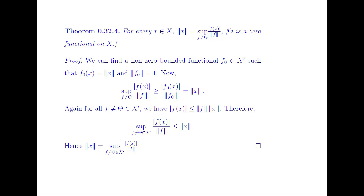Again, for any nonzero functional in the dual space of X, we have |f(X)| ≤ norm(f) · norm(X). Therefore the supremum of |f(X)| / norm(f) is less than or equal to norm(X). Hence from these two inequalities, norm(X) equals the supremum of |f(X)| / norm(f) where f is a nonzero functional on X.